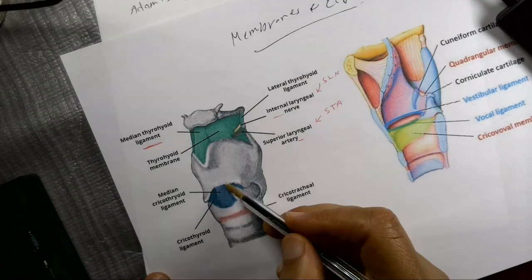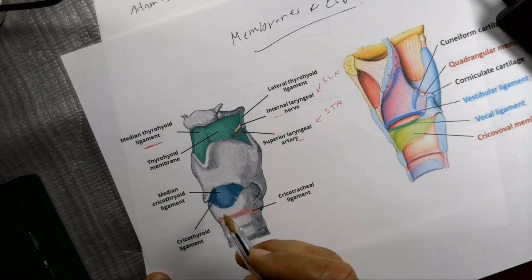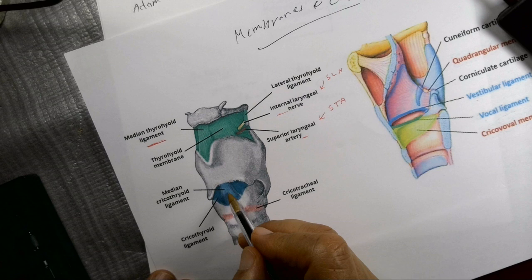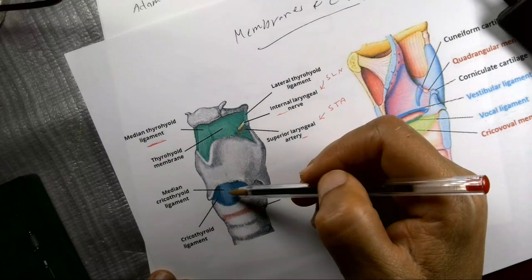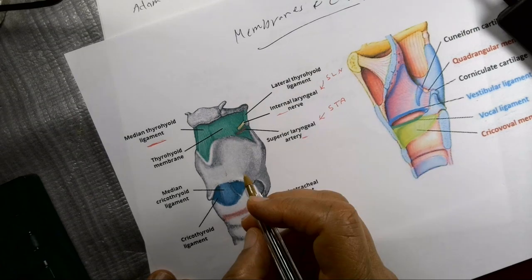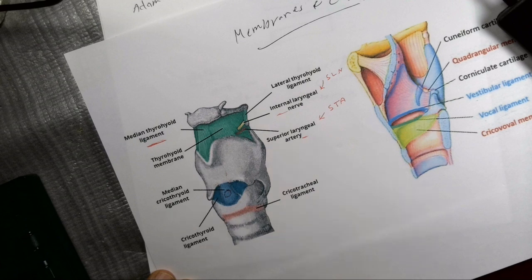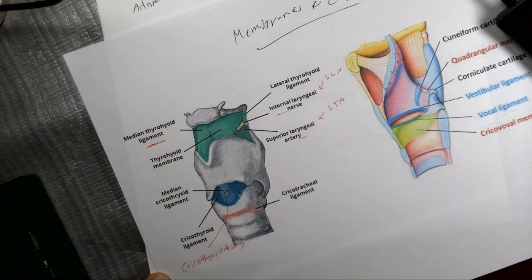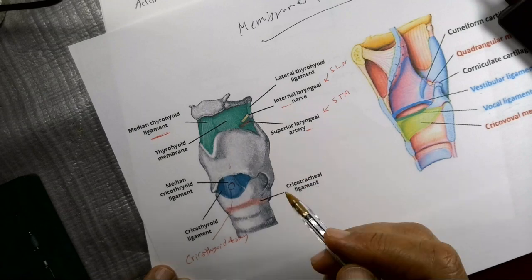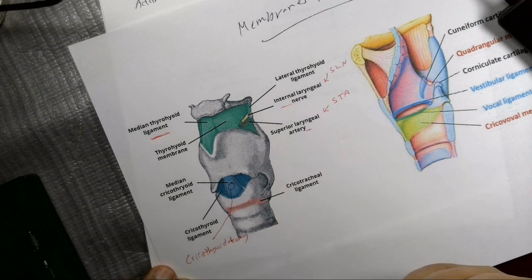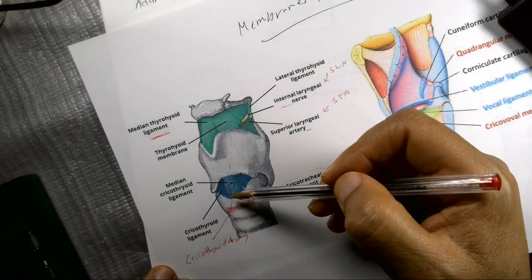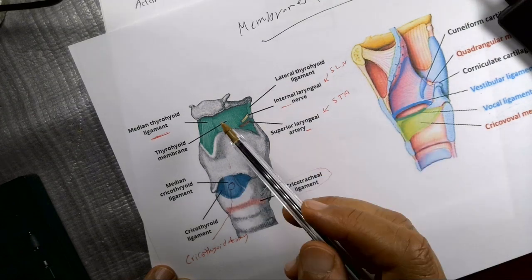The cricoid and thyroid cartilages are connected by the cricothyroid membrane, and its central thickened part is called the cricothyroid ligament. One important point: if there is airway obstruction above this level, the quick response — even in an outpatient clinic — is to open a hole in this ligament. This procedure is called cricothyroidotomy, and it is used to overcome airway obstruction. It is different from tracheostomy, which must be done in an operating room. The cricoid is also connected to the trachea by the cricotracheal ligament.